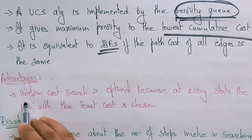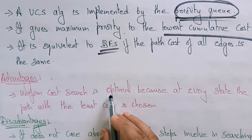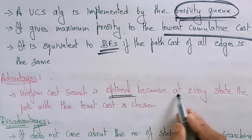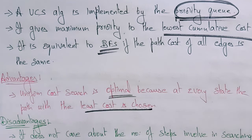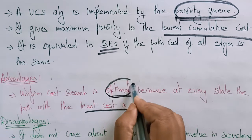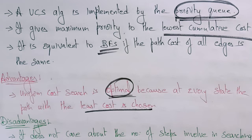The advantage of Uniform Cost Search is that it is optimal. At every state, the path with the least cost is chosen. Since the algorithm always selects the least cost nodes at every state of the path, it guarantees reaching the goal with the minimum cost.